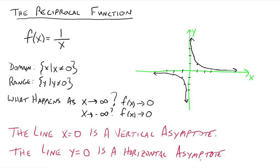Horizontal asymptotes are a little trickier. They are what your function values are approaching as x values get really, really large — we're talking enormous numbers, as x goes out toward positive or negative infinity. If your y values keep getting closer and closer to a certain number rather than just growing without bound, we call that a horizontal asymptote. In this case, the y values keep getting closer and closer to 0, so the line y equals 0 is a horizontal asymptote.